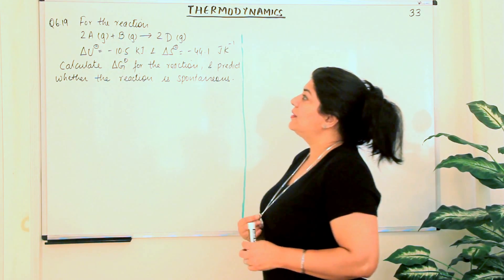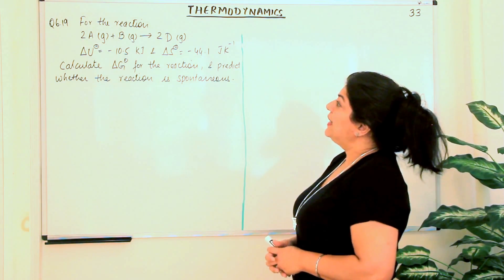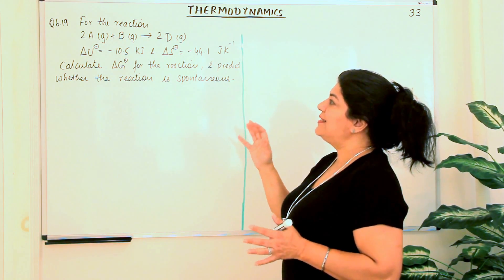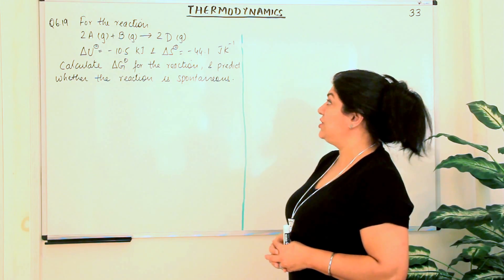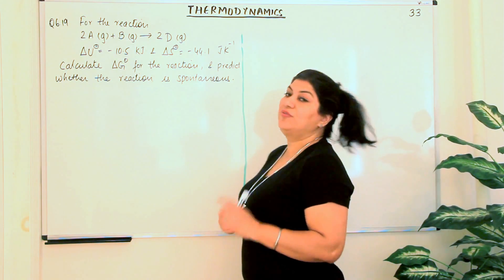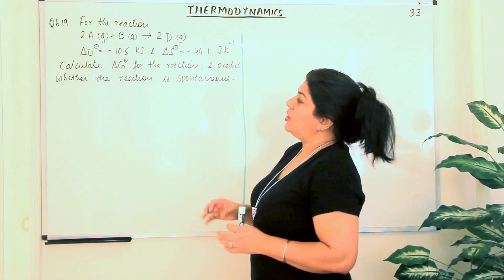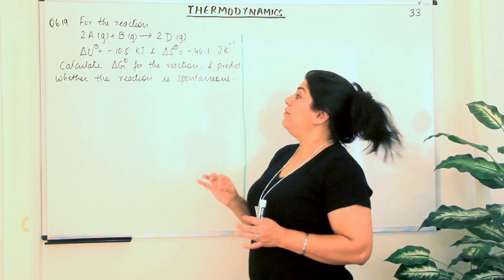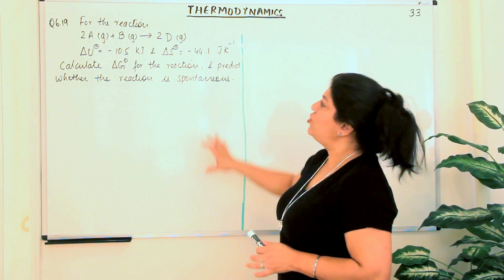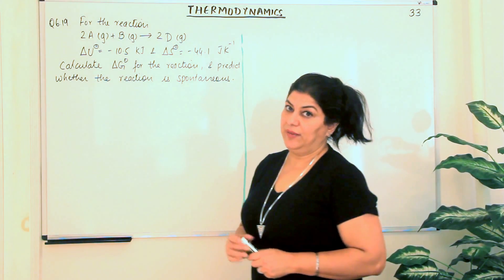The question reads that there is a reaction: 2A gaseous plus B gaseous gives you 2D gaseous. It is a hypothetical equation where all the reactants and the products are gaseous in nature. You have 2 moles of A and 1 mole of B resulting in the formation of 2 moles of D. Delta U⁰ is given as minus 10.5 kilojoules and delta S⁰ is given as minus 44.1 joules per Kelvin.